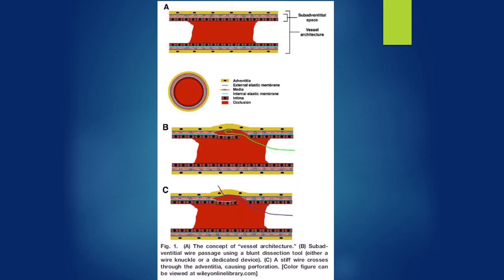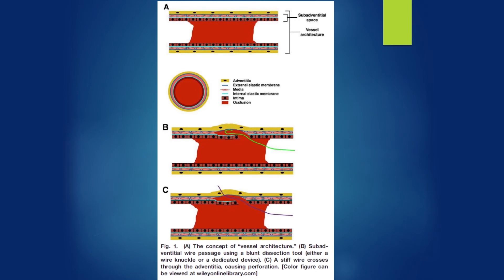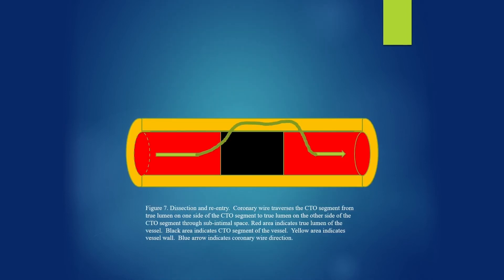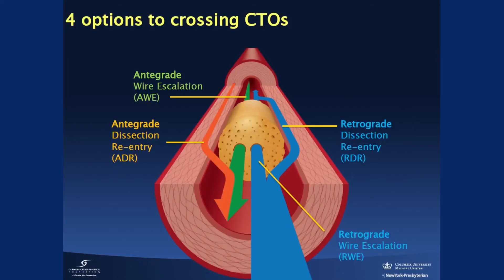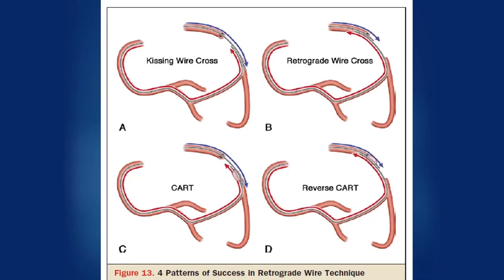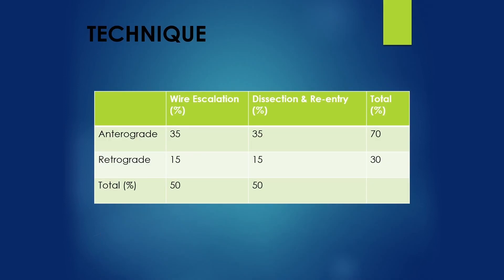Vessel architecture is an important concept to understand. Historically, we used stiff wire to cross a CTO lesion, which often did not work or resulted in complications. Utilizing specialty wires, we are able to use a dissection reentry technique to get around the CTO segment rather than puncturing through it directly. There are four ways to cross the CTO segment: antegrade wire escalation, antegrade dissection reentry, retrograde wire escalation, and retrograde dissection and reentry. About 70% of CTO cases are done antegrade, while about 30% are done retrograde.